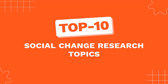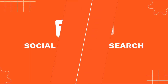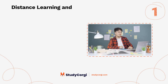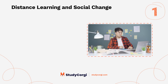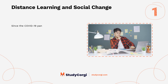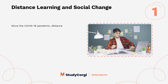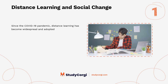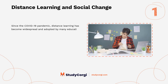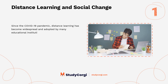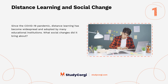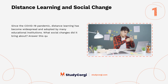Top 10 Social Change Research Topics. Distance Learning and Social Change: Since the COVID-19 pandemic, distance learning has become widespread and adopted by many educational institutions. What social changes did it bring about? Answer this question in your essay.